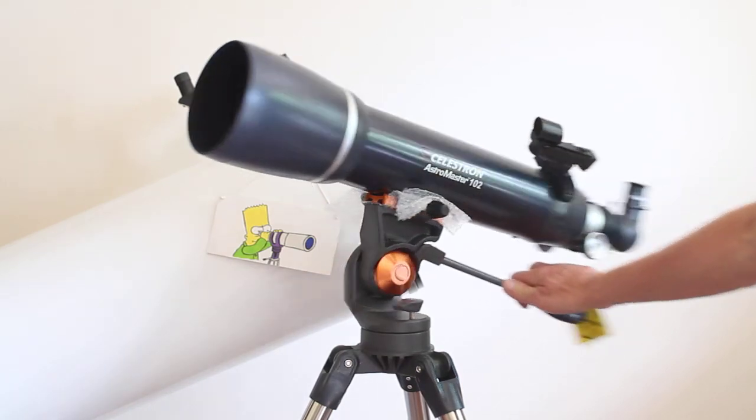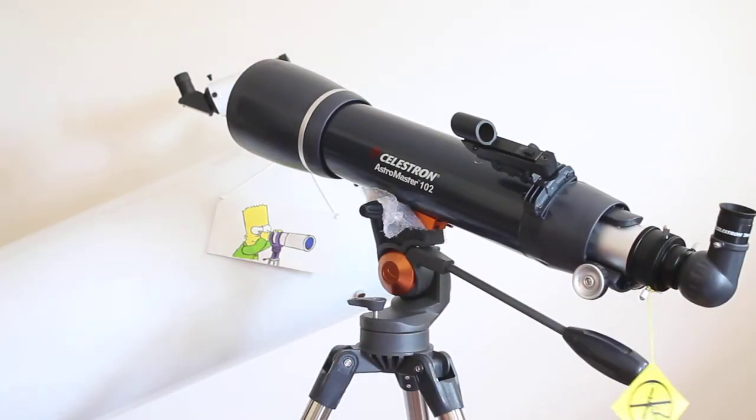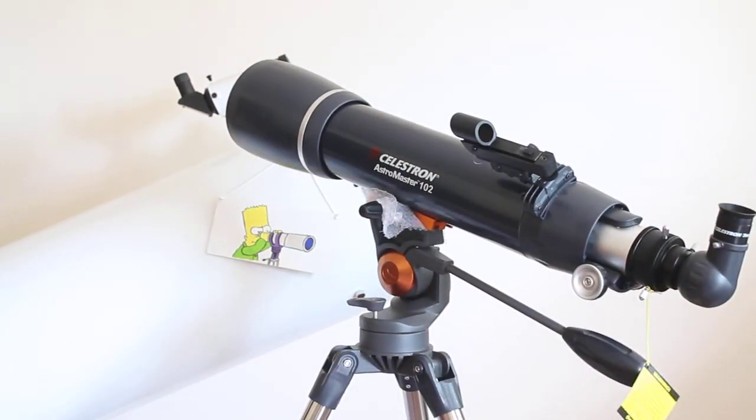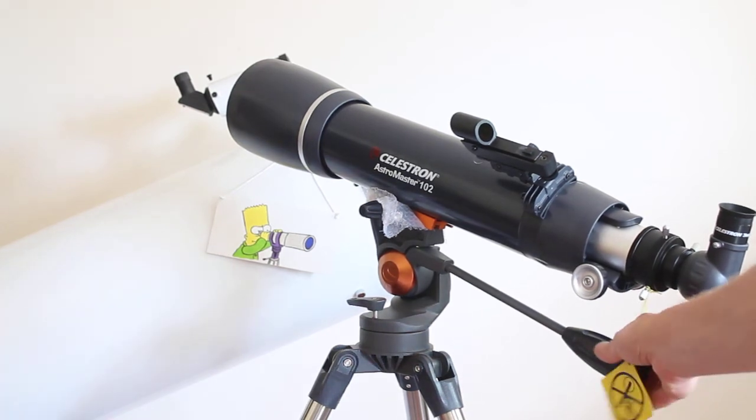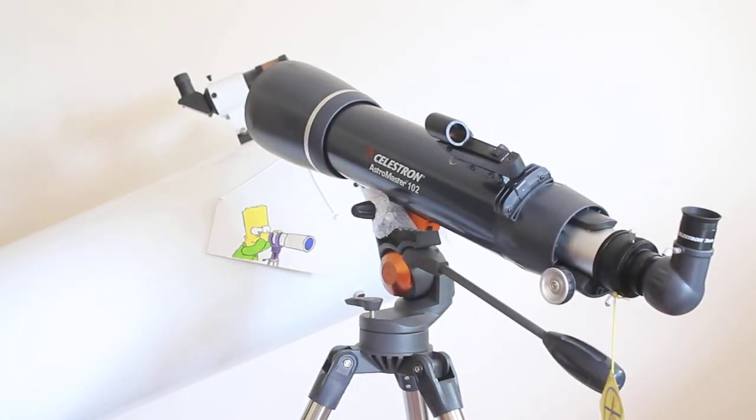Magnification with a 10mm is 66x magnification, and with a 20mm, 33x. That's perfectly adequate for looking at the craters on the moon, many colorful double stars, rich field star clusters...